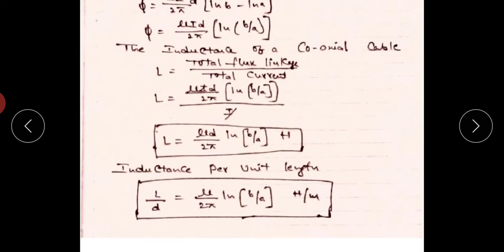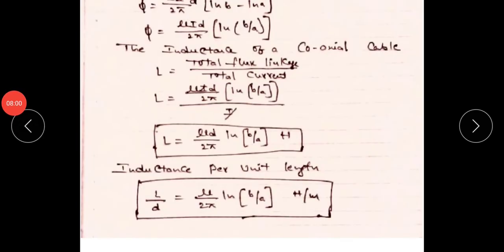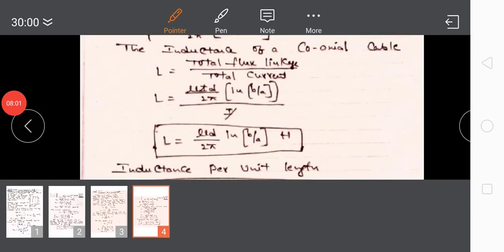The self-inductance per unit length is L/d = μ / 2π · ln(b/a) henries per meter. This is the self-inductance of a coaxial cable, which is also called a coaxial transmission line.